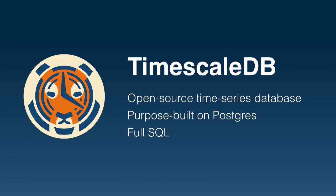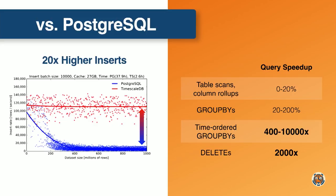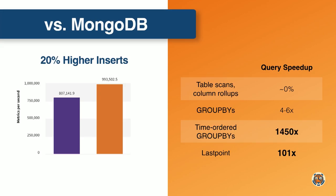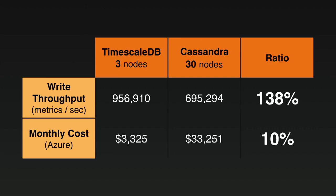I'm from TimescaleDB — we provide an open source time series database purpose-built on Postgres that supports full SQL. Does it actually scale? Compared to Postgres, we achieve 20X higher inserts and query optimizations up to 10,000 times faster. Versus MongoDB, 1,500 times faster with query optimizations. Against Cassandra, 10X faster inserts and thousands of times faster on some queries. Just yesterday we published a blog post comparing a three- or five-node Timescale cluster versus a 30-node Cassandra cluster and found we were still getting 40% faster inserts at one-tenth the cost.